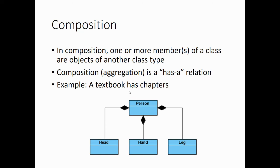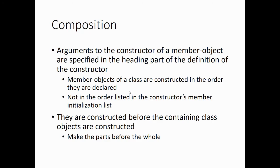In composition, a textbook has chapters, a person has a head, a hand, and a leg. If we're making a person, we need to make the parts first — the head, the hand, and the leg — and then we can put together a person. Arguments to the constructor of the member object are specified in the heading of the constructor definition. Member objects of a class are constructed in the order they're declared, not in the order listed in the constructor's member initialization list. The subparts are constructed before the containing class — you make the parts before the whole.